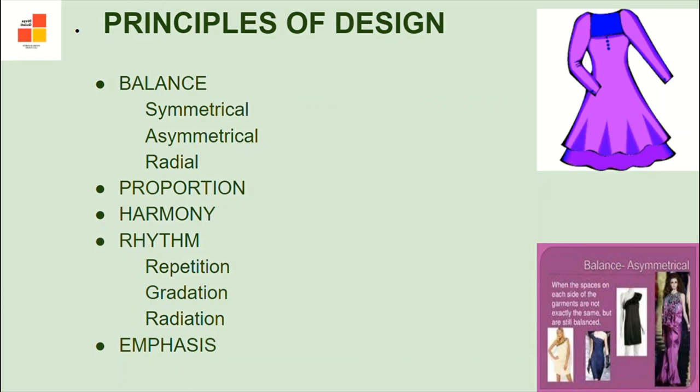Next, rhythm — a pleasing sense of organized movement that gives continuity to the design. It can be created by repetition of embroidery, laces, or buttons. Gradation is achieved by gradually increasing or decreasing the size of motifs. Radiation is brought about by gathers and darts. Eye movement in an unorganized way disrupts rhythm.